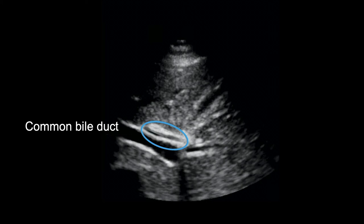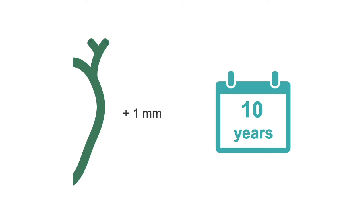The common bile duct size can be very well seen with ultrasound. A diameter greater than 8 mm or 0.8 cm can be concerning for obstruction of the common bile duct and usually warrants further investigation of the common bile duct, for example, with magnetic resonance cholangiopancreatography, or MRCP. The common bile duct generally increases in size by 1 mm for every decade of life.